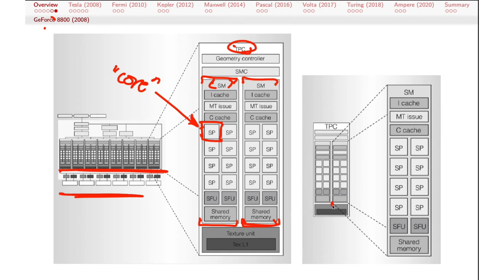There's also an exploded diagram of an individual streaming multiprocessor. We can see the streaming processors, some special functional units which do things like transcendental functions like sine and cosine, and some caching per streaming multiprocessor — an instruction-level cache and a constant cache. If you have specific constant values you need to refer to over and over again, nearby the processors but that need to change over time, you can store those in that cache. There's also shared memory, which provides access to all of the SPs on an SM.